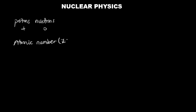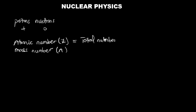Every atom has what we call the atomic number, denoted by Z, and the mass number, denoted by A. The atomic number is the total number of protons in the nucleus of an atom. For neutral atoms where the number of protons and electrons are the same, the atomic number can also equal the total number of electrons of the atom.